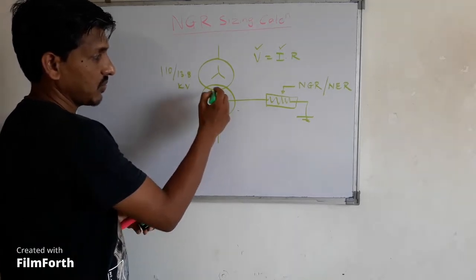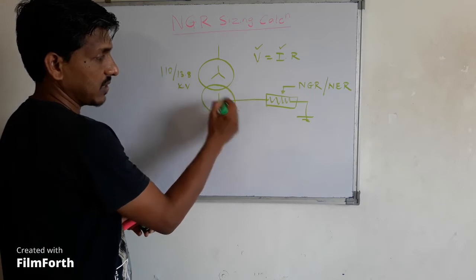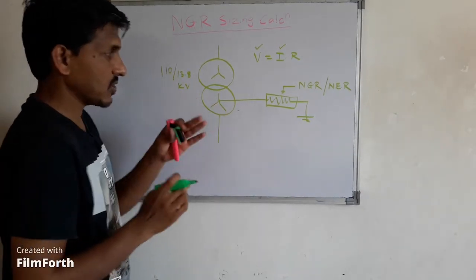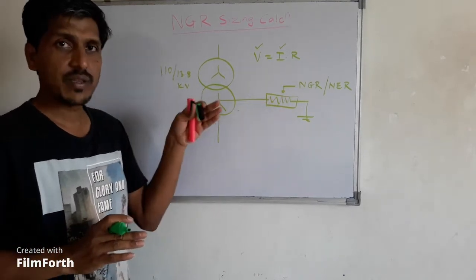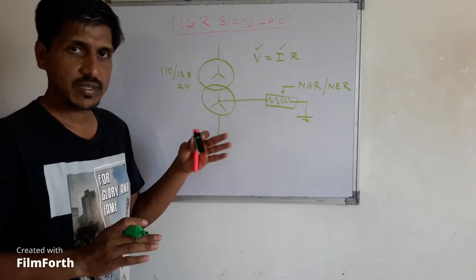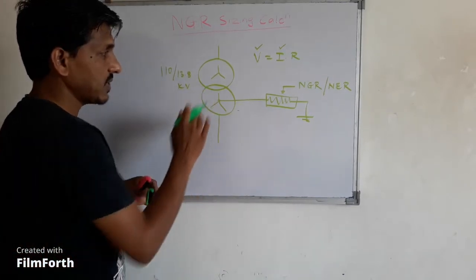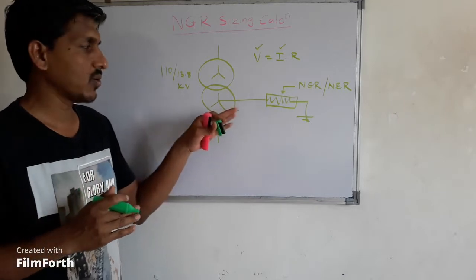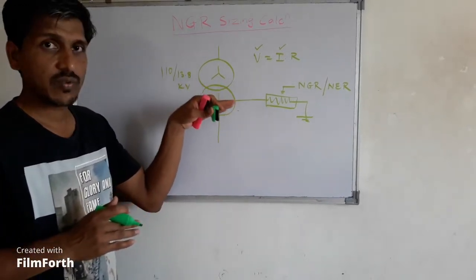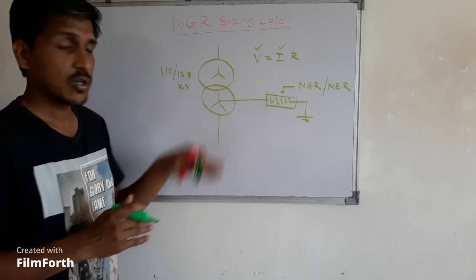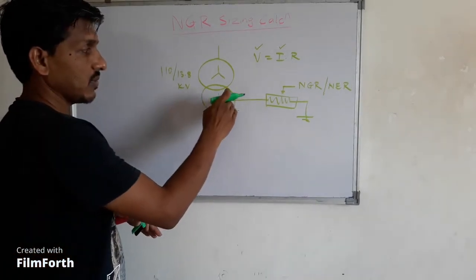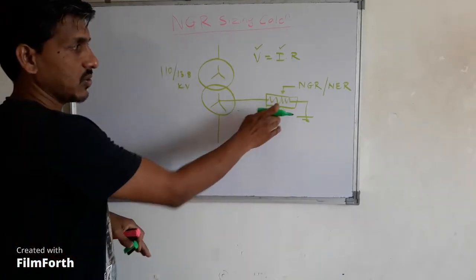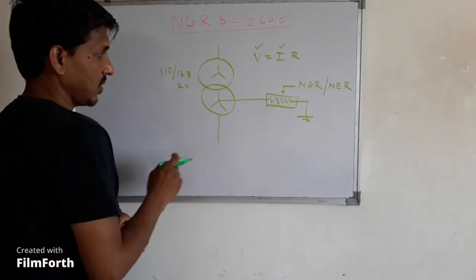NGR is normally used at the MV side — medium voltage — or at the HV side, not at the LV side. At the LV side, the earth fault current is at a lower level so you don't need to limit that current. But at medium or high voltage, the voltage level is very high, and in case of an earth fault, a huge current can flow through the neutral. To limit that current, you use the NGR.